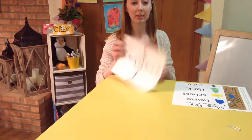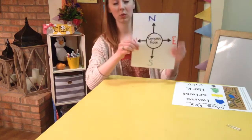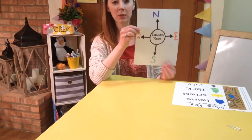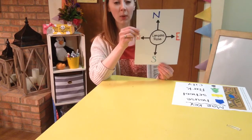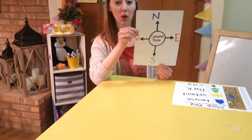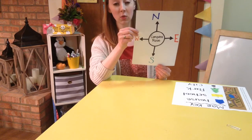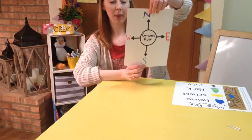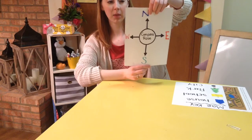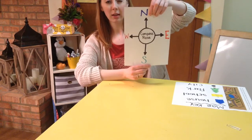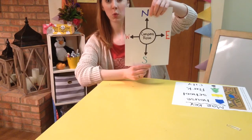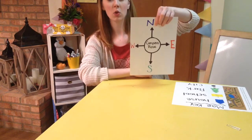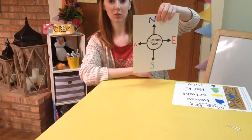The first part that we're going to talk about is a compass rose. Can you say that with me? Compass rose. A compass rose is always somewhere on a map, and it lets us know which way is north. North is usually going to be towards the top of the map. It's usually just going to have the letter N, because north starts with the letter N.